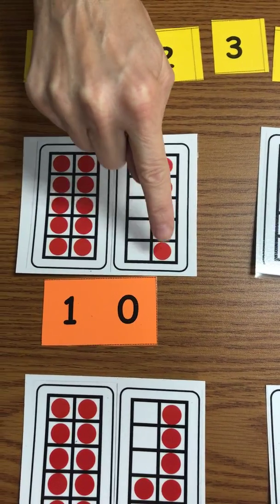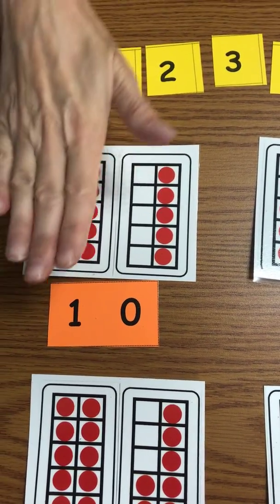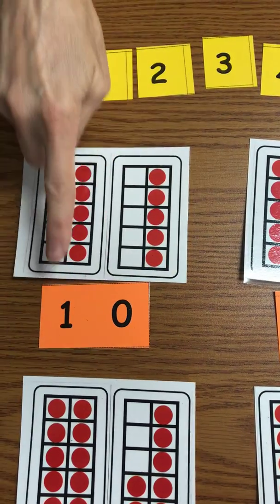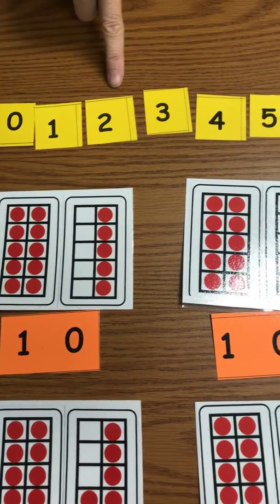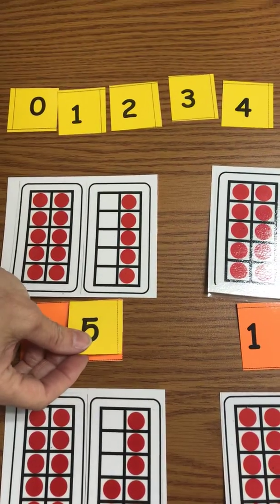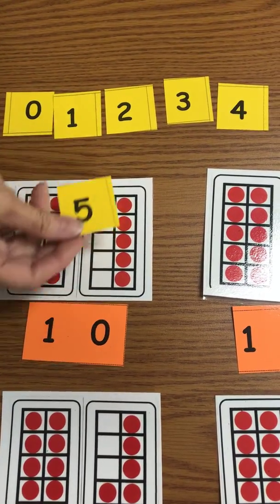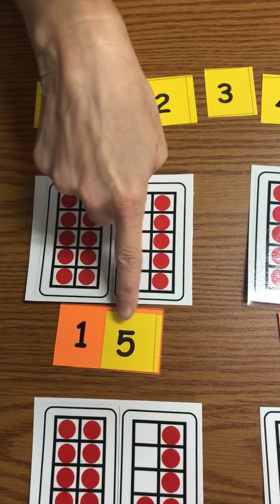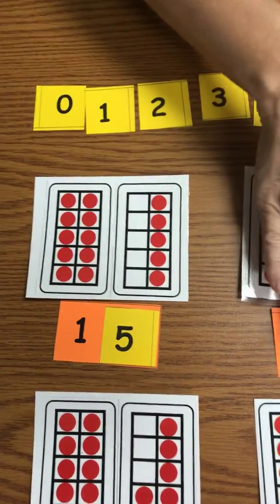1, 2, 3, 4, 5. So I have 10 ones and 5 ones. Now come up here and find your number 5. There it is. And I'm going to cover that up. So I had 10 and I added 5 more. And now I have 15. And I'm going to keep going.